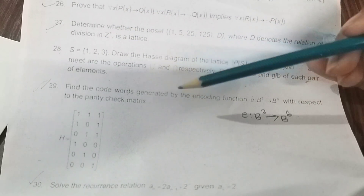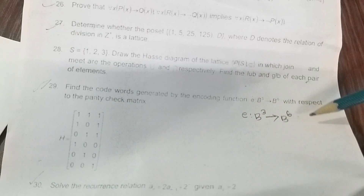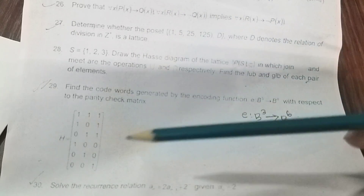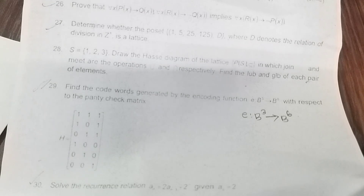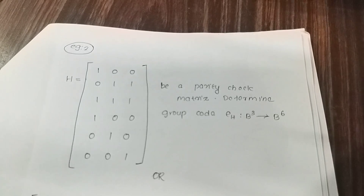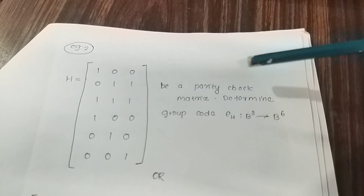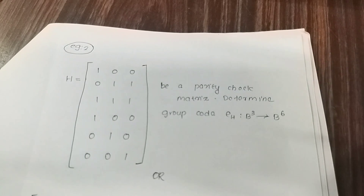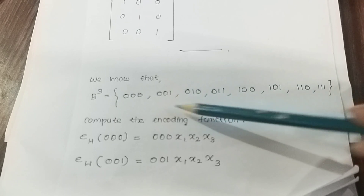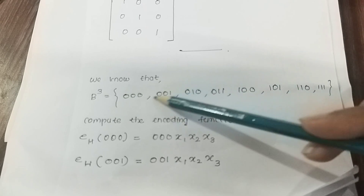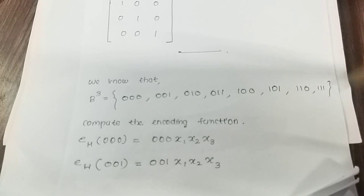Find the code words generated by the encoding function e: b³ → b⁶ with respect to the parity check matrix. This is the parity check matrix and code words. The procedure is: first, domain b³ — there are 8 elements in b³ since 2³ = 8.